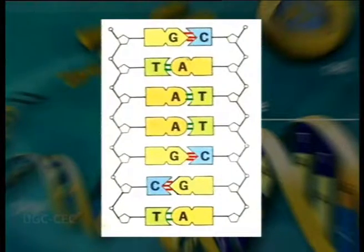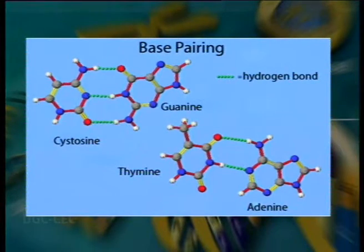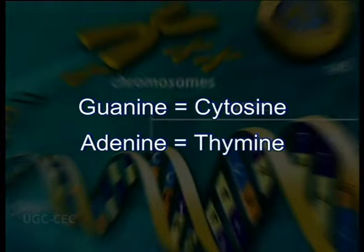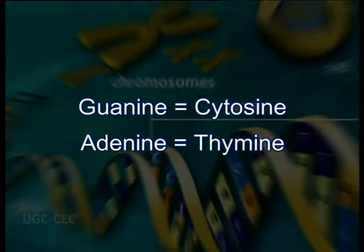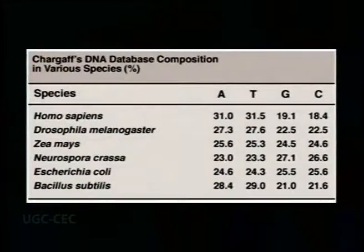Second, the density of DNA suggested that the helix must contain two polynucleotide chains. The constant diameter of the helix predicted from the density can be explained if the bases in each chain face inward, so that a purine is always opposite a pyrimidine, avoiding purine-purine or pyrimidine-pyrimidine pairing. Third, irrespective of the actual amount of each base, the proportion of guanine is always the same as the proportion of cytosine, and the proportion of adenine is always the same as that of thymine — as established by Erwin Chargaff.